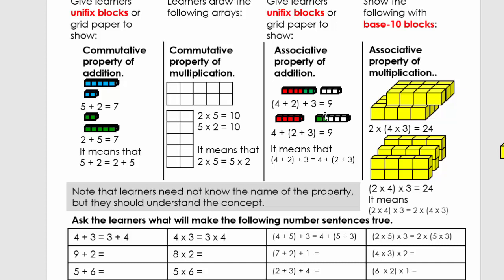Here we also have two rods, but this time we have four here and two and three on this side. So we have four plus — where we have one rod — we say two plus three, that equals five. So four plus five equals nine. This means that (four plus two) plus three equals four plus (two plus three). I want you to pause the video and explain this to an adult.